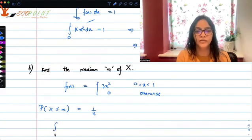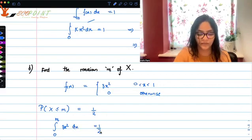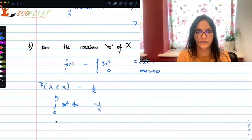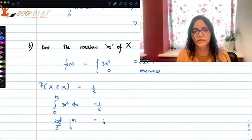So that means probability 0 to m fx dx, that is 3x square dx is equal to half. So which means that integrate, you will get 3x square, 3x cube upon 3, 0 to m is equal to half.